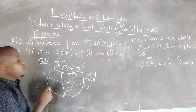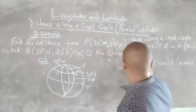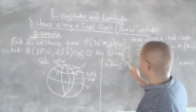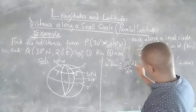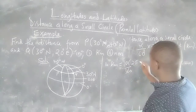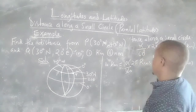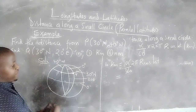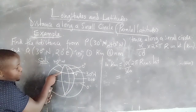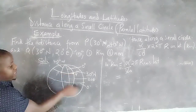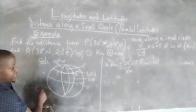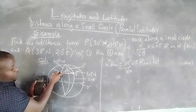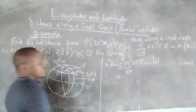The distance along a small circle in kilometers will be given by (alpha/360) × 2π × R·cos(latitude). We need the difference in longitudes: P is at 40° West and Q is at 20° East. The difference from 40° West to 20° East is 40 + 20 = 60 degrees. So alpha = 60°.